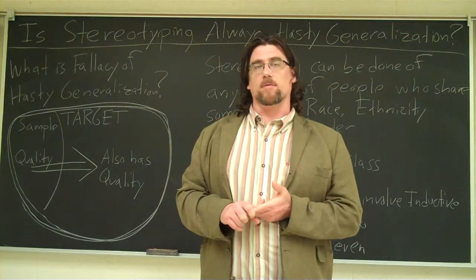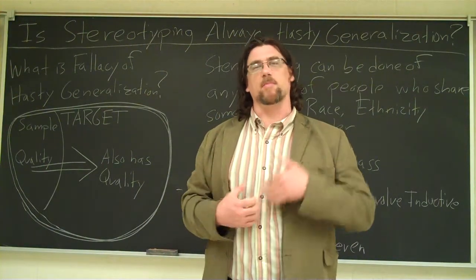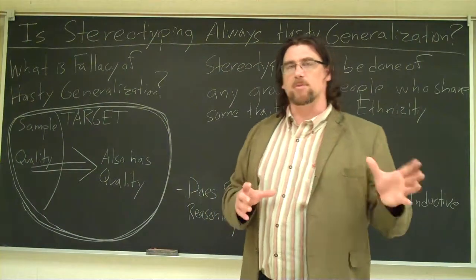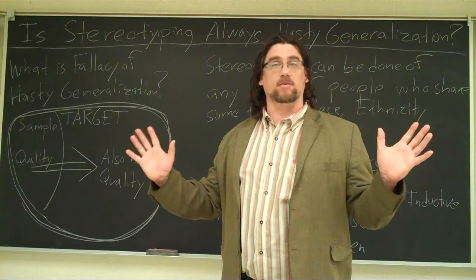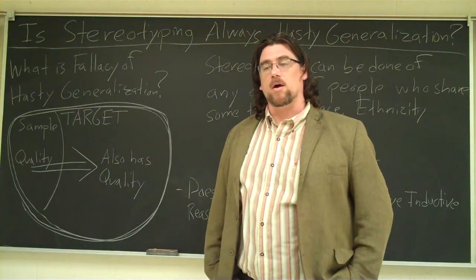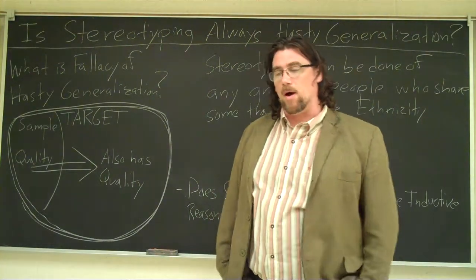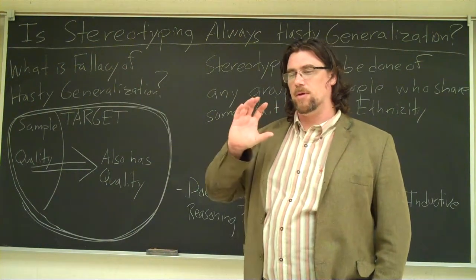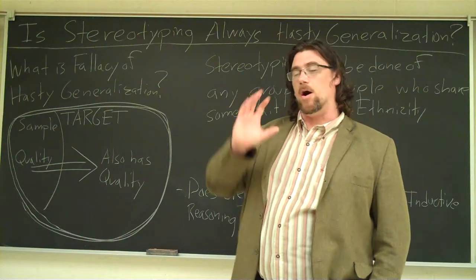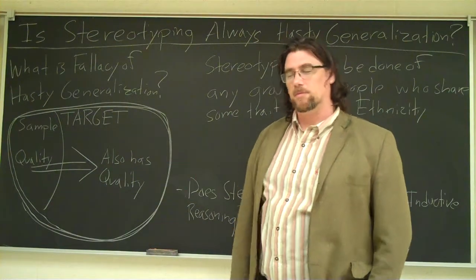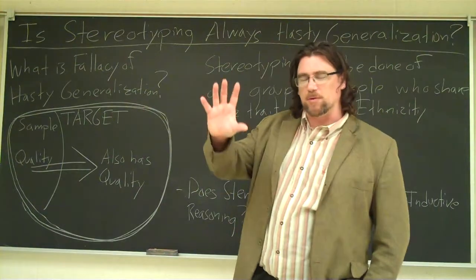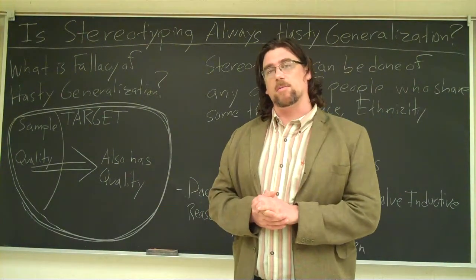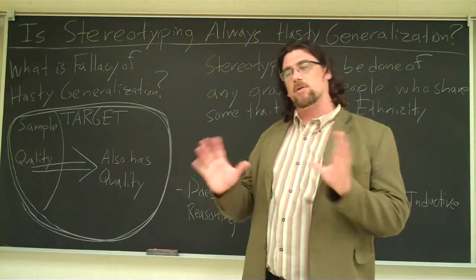Deductive reasoning is unassailable when the premises are actually true and the argument is valid. There are ways of setting up deductive arguments that make them invalid. For example: 'All Irish people love potatoes, all terrorists love potatoes, therefore all Irish people are terrorists.' We're working with false premises, but even if those premises were true, the conclusion wouldn't follow — there's something wrong with the form. You can look right at a deductive argument and see that.